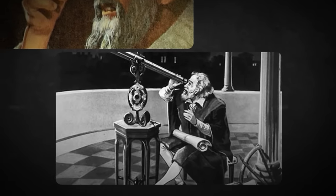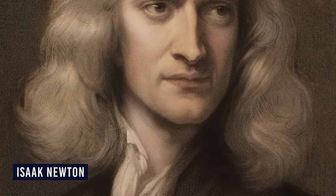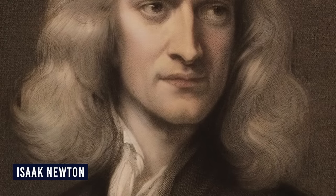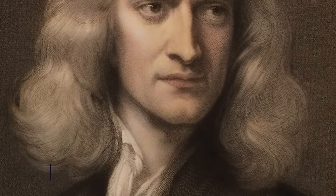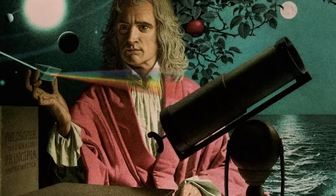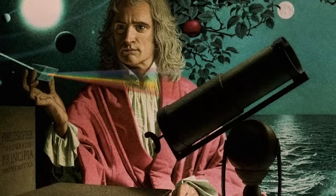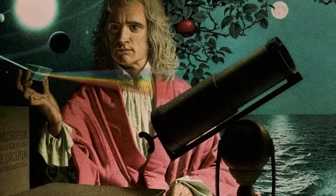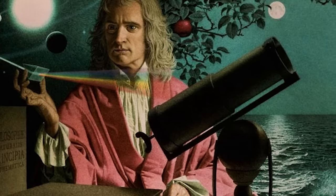Isaac Newton improved upon the refracting telescope when he introduced reflective telescopes, which use mirrors to capture and focus light. This offered astronomers larger apertures and superior performance, enabling them to observe fainter celestial objects.